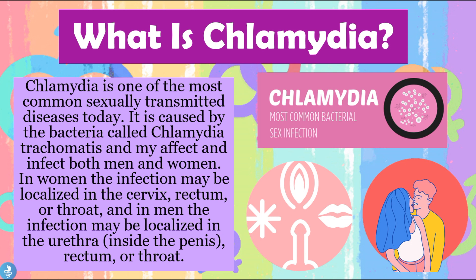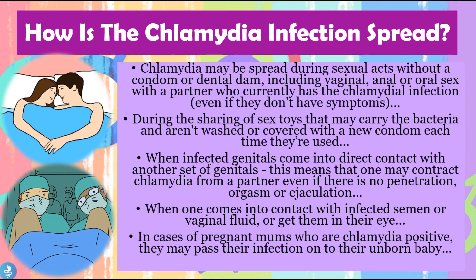So now that we know what chlamydia is and what bacteria causes it, let's take a closer look at how it can be spread. Chlamydia may be spread during sexual acts with or without a condom or a dental dam, which includes vaginal, anal, or oral sex with a partner who currently has the chlamydial infection, even if they don't have any symptoms.